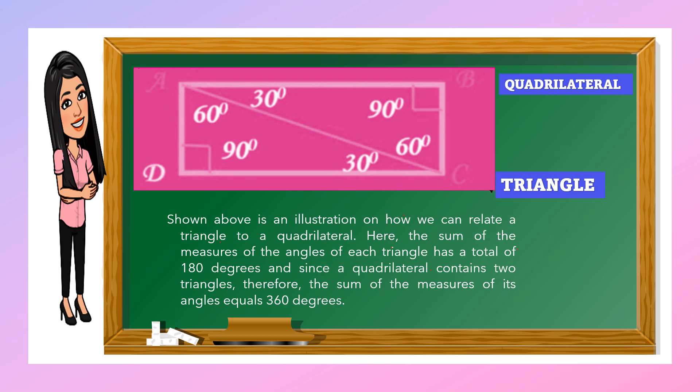Since a quadrilateral contains two triangles, the sum of these measures—180 and 180—equals 360 degrees. A quadrilateral measures 360 degrees, and when you divide it, you have two triangles, each measuring 180 degrees.